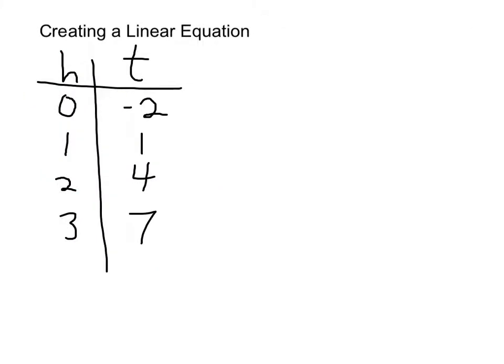We're going to look at creating a linear equation for a bit of a harder table of values. First thing we want to do is always check to make sure we actually have a linear equation. We're going to make sure that the dependent variable increases by the same amount every time, and that the independent variable also increases by the same amount every time. I go up by 3, up by 3 again, and up by 3 again — so the dependent side goes up by 3 every single time. And the independent variable goes up by 1 every single time. So this relationship is linear.